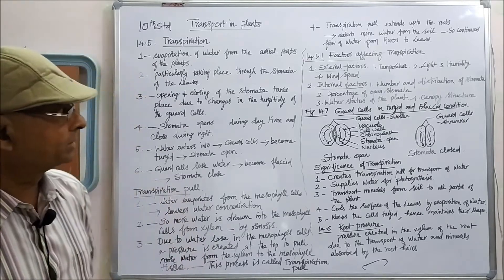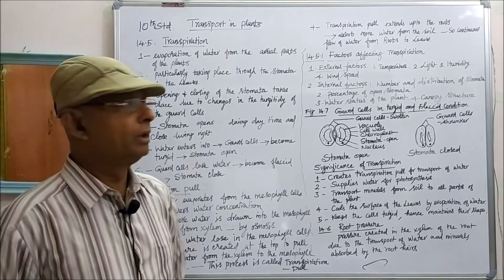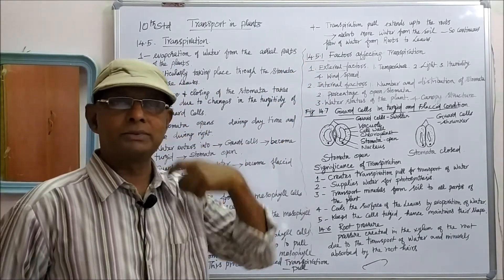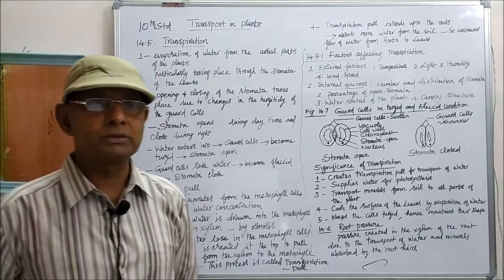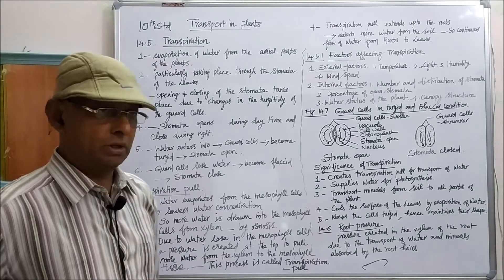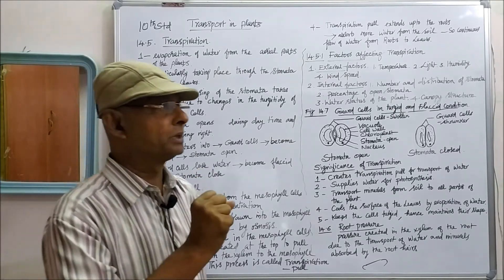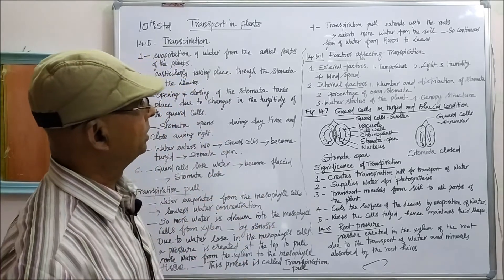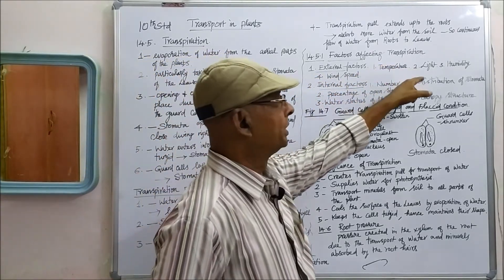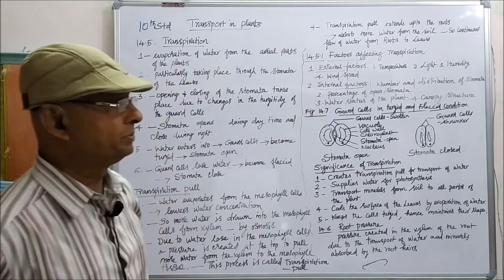There are factors affecting transpiration. Factors are classified into two types: external factors and internal factors. External factors are those outside the plant that affect transpiration. Number one: temperature. Number two: light. Number three: humidity. Number four: wind speed.